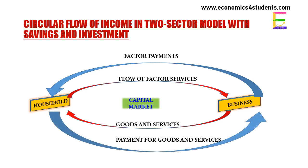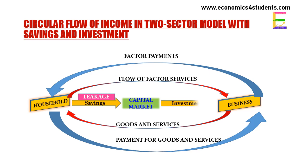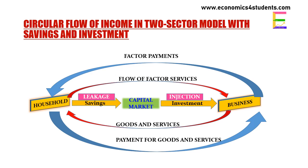Part of the income of households flows as payment for goods and services, and part of the income flows to the capital market in the form of savings. So savings represent a withdrawal or leakage from the circular flow of income. These savings flow to business through the capital market to finance investment. So investment is an injection to the circular flow of income, and equality between savings and investment means equilibrium in the circular flow of income.